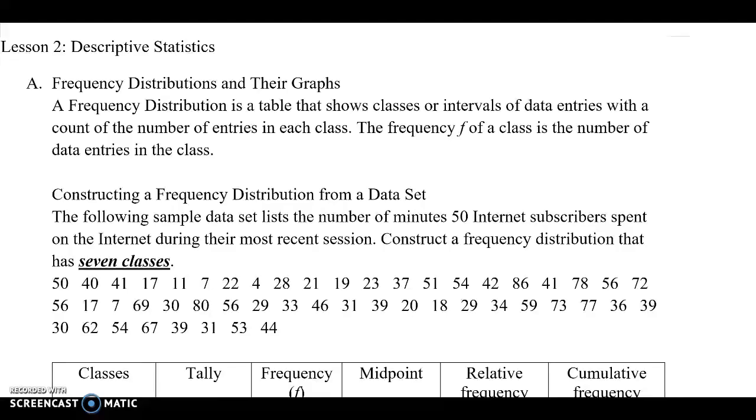A frequency distribution is a table that shows classes or intervals of data entries with a count of the number of entries in each class. The frequency f of a class is the number of data entries in the class.